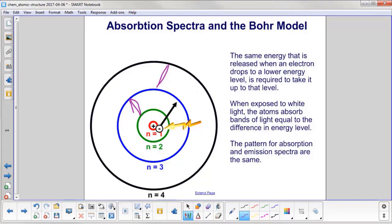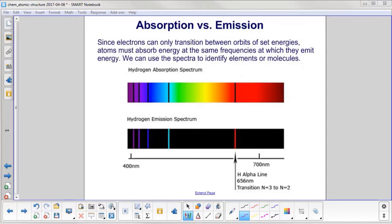The absorption spectra pattern is similar, the same, with the emission spectra. As predicted by the Bohr model and verified in reality, electrons can only transition between orbits of set energies. Therefore, they must absorb energy at the exact same frequencies at which they emit the energy. We can use these spectra to identify elements or molecules. So here's the hydrogen absorption spectrum. Here's the emission spectrum. Note how the lines are in the same place. And really the only difference here is the background color.